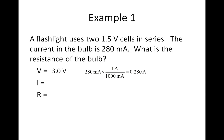We also need to convert the current from milliamps into amperes. We do that by multiplying by a factor of 1 over 1000 — the same as dividing by 1000. We move the decimal place three places to the left, so the current is 0.280 amps. The resistance is what we're asked to find out.